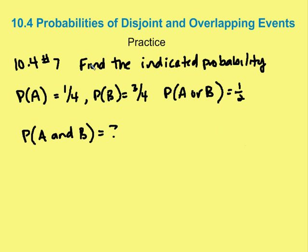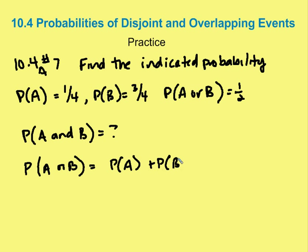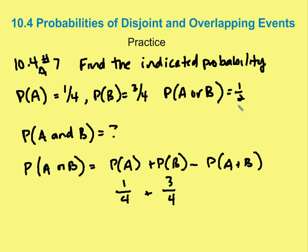In the next problem, 10.4A number 7, we're asked to find the probability of A and B. Again, the formula is P(A or B) = P(A) + P(B) − P(A and B). We know P(A) is 1/4, P(B) is 3/4, and P(A or B) is 1/2.